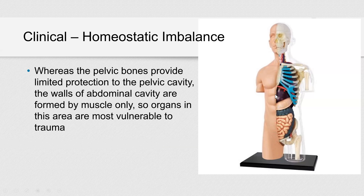The abdominal cavity — which has your liver, stomach, large and small intestine — does not have bony protection, but that gives you a lot of movement ability and reduces overall body weight. Imagine if you had a complete bony structure protecting your entire body — you would gain some protection but lose mobility. That's also why if somebody is in a car accident, that area can be damaged because of limited protection.